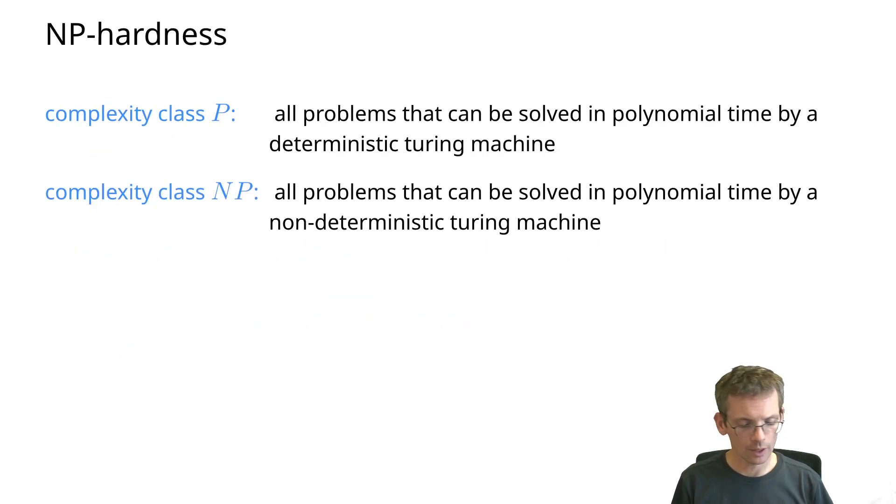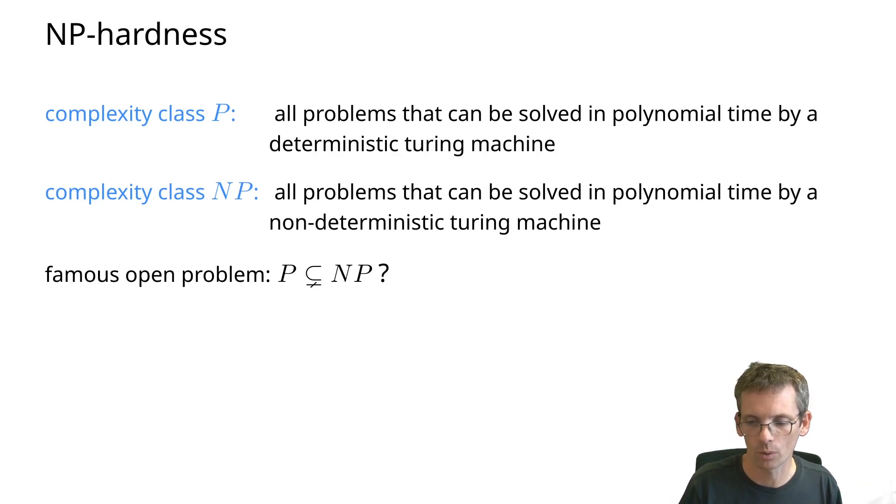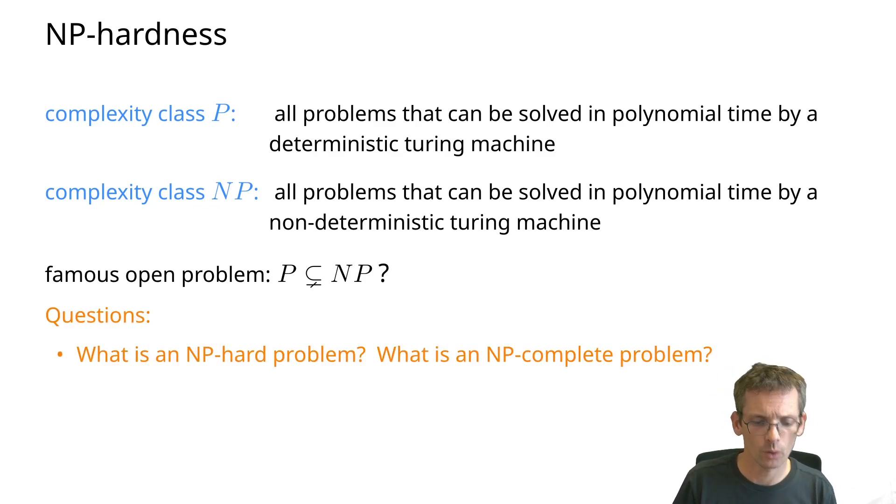NP-hardness. We have these complexity classes P, NP. Problems that we can solve in polynomial time on a Turing machine, or in polynomial time on a non-deterministic Turing machine - that would be NP. Intuitively, P is the problems that we can solve in polynomial time. NP, the problems that we can check in polynomial time, and we don't know whether we can solve them in polynomial time. That is a big open problem in computer science, whether P is unequal to NP. Some questions for you.